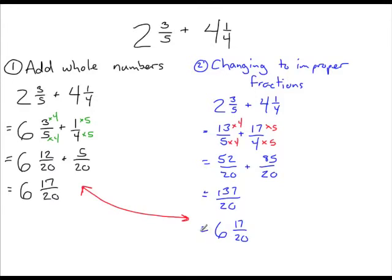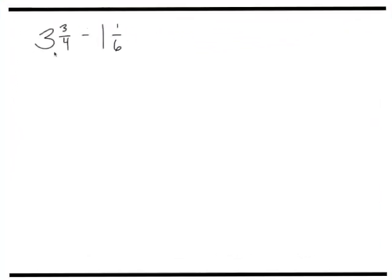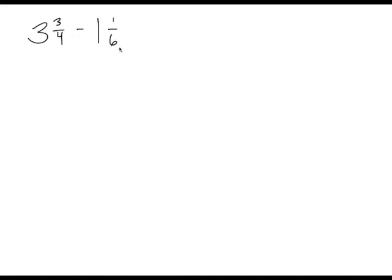However, this is not the case when we subtract mixed fractions. In this final example, let's subtract 3 and 3 quarters minus 1 and 1 sixth. You might be tempted to subtract the whole numbers first and then the fractions, but if the first fraction is smaller than the second, you'd need to borrow, and we don't want that. The easiest and most reliable way when subtracting is to first change the mixed fractions to improper fractions and then subtract.